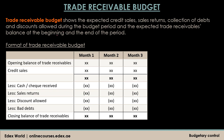Then we have the trade receivable budget, which shows the transactions expected with the debtors of the business — the expected credit sales, sales returns, collection of dues from customers, discounts allowed, and opening and closing balances of debtors. The format starts with the opening balance of debtors, to which we add credit sales expected. Then we deduct cash or checks received from customers, sales returns, discounts allowed, and any bad debts to arrive at the closing balance. This format is similar to the sales ledger control account — the debit side has opening balance and credit sales, while the credit side has collections, discounts, bad debts, and sales returns, giving us the closing balance of trade receivables.